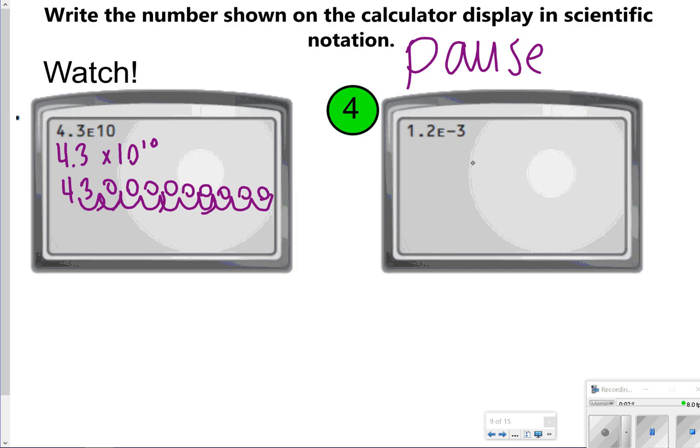Okay, so the negative 3 just means we're going to move the decimal in the negative direction three times. 1, 2, 3. That was a little bit different than the previous one. The previous one had a positive number, but this one has a negative number. So my answer would be 0.0012 for number 4.